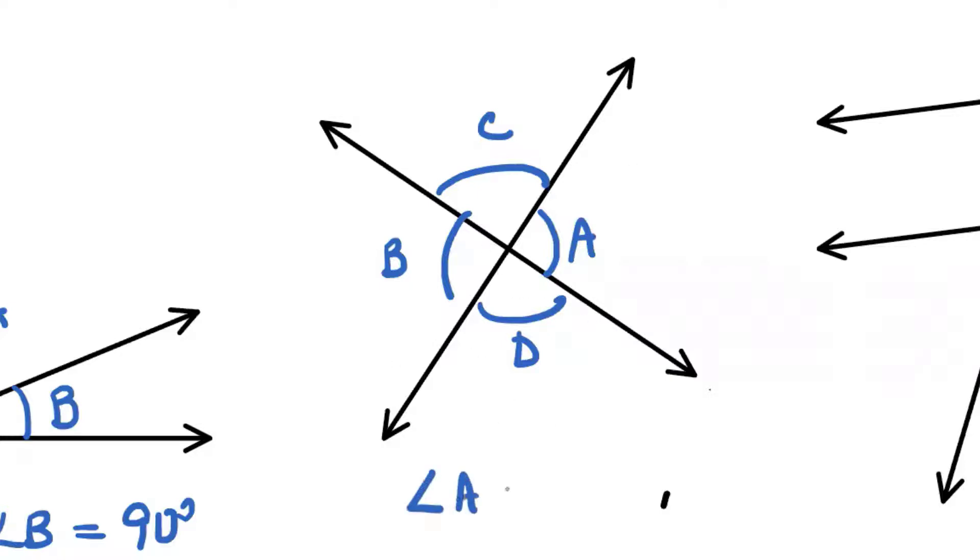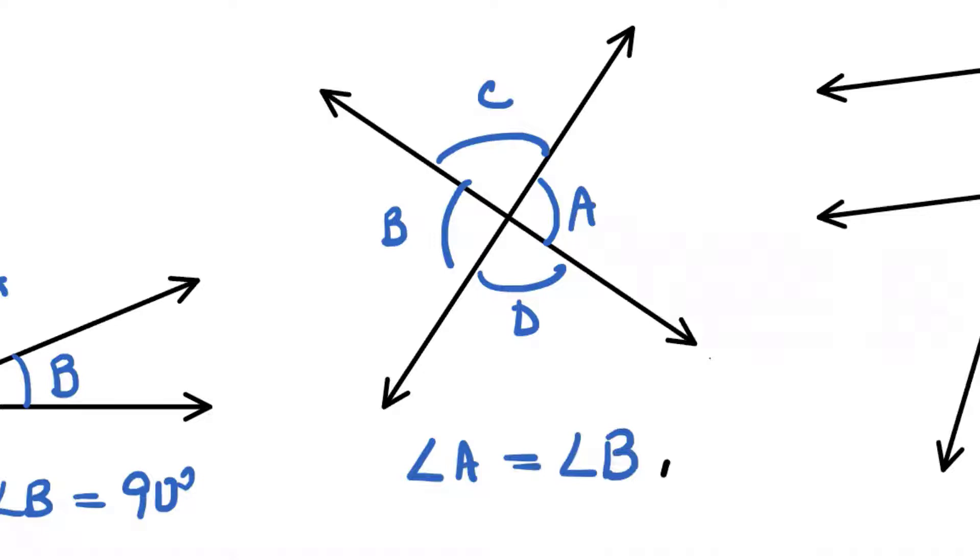So we could say if anytime we're given a diagram and we have to analyze angles and it's two lines intersecting, you can look and see that there are a couple of pairs of vertical angles. Angle A must be equal to angle B. And what else? Angle C must be equal to angle D. That's right. Vertical angles are equal.